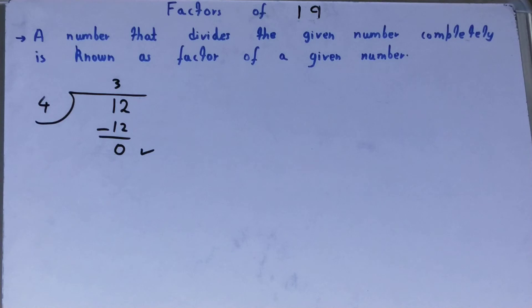If you don't get the last remainder as zero, then that number is not a factor of the given number. That's the basic logic or primary logic of factors. Now let's come back to our main problem.